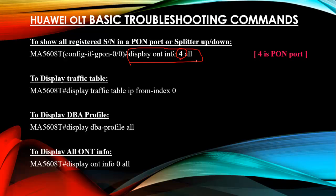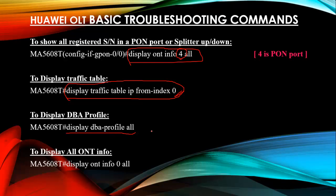Use 'display traffic table ip from index 0' to show all traffic table profiles configured for binding to your clients — index 0 means it starts from the beginning listing all profiles. Use 'display dba-profile' to view your DBA profile configuration.